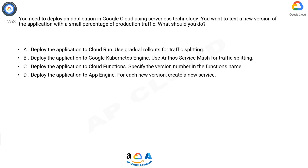C. Deploy the application to Cloud Functions. Specify the version number in the function's name. D. Deploy the application to App Engine. For each new version, create a new service.